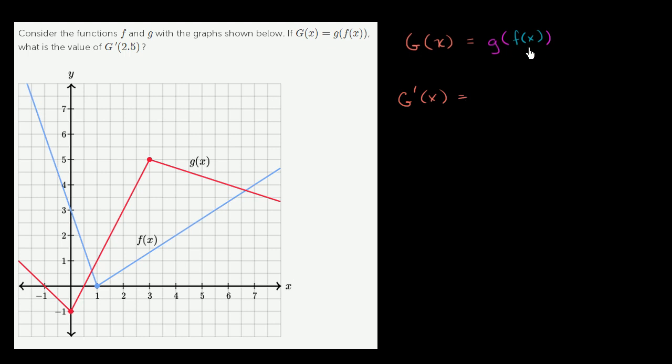On the right-hand side, since we have a composition of two functions, we apply the chain rule. This is going to be the derivative of g with respect to f, so we could write that as g prime of f of x times the derivative of f with respect to x, times f prime of x.